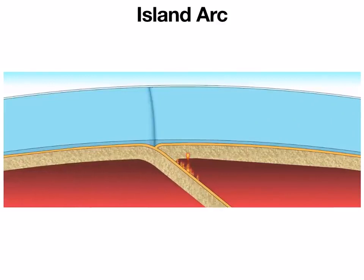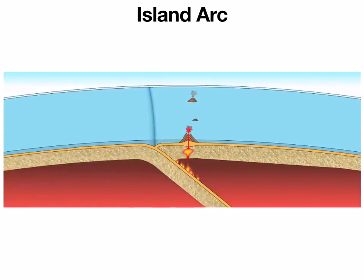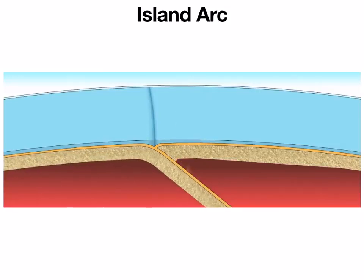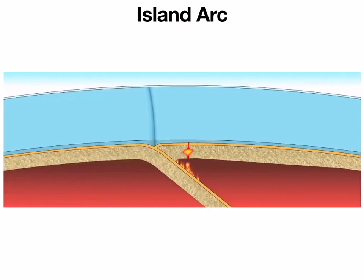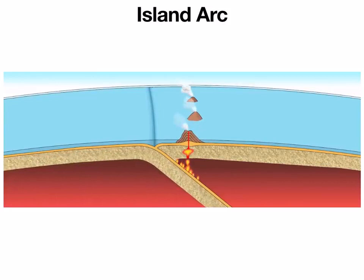We also have island arcs — very similar to a subduction zone. The only difference is that this is oceanic-to-oceanic, so no continents involved. It's a little hard to tell which plate is going to subduct, since they both have the same density, but eventually one plate — usually the older rock — will sink under the younger rock. Again, the melting causes rising magma to create active volcanoes, which in this case form volcanic islands because we're out in the middle of the ocean. We also get a trench, and of course lots of active earthquakes along the subducting plate.